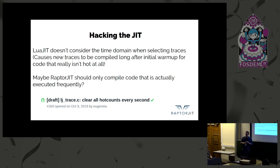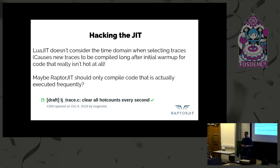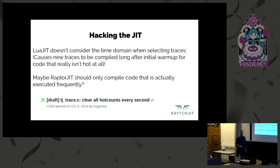LuaJIT doesn't actually consider the time domain when selecting traces. A branch could become hot because it was executed for the hundredth time after an hour of runtime. The hotness is not actually frequency but rather an abstract counter that at some point overflows. I think that's really unintuitive behavior. Maybe LuaJIT should consider the time domain and only compile code which is actually executed frequently. We did some experiments with that — the results so far were positive — and that's the kind of hacking we're doing on this fork.